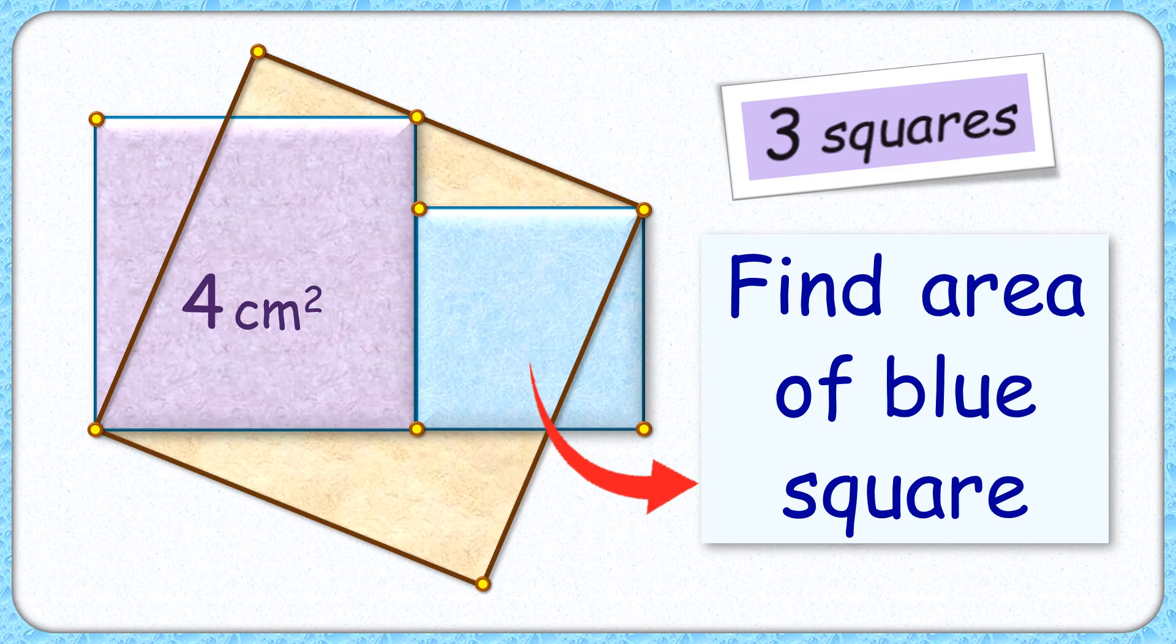Welcome everyone to this interesting question. We have three squares: this purple and blue square are in one line, and the third brown square has one vertex coinciding with the purple square and another opposite vertex coinciding with the blue square.